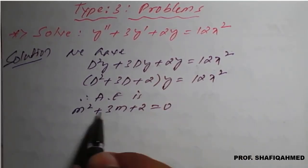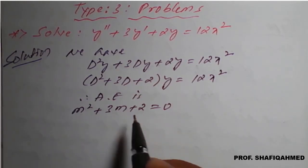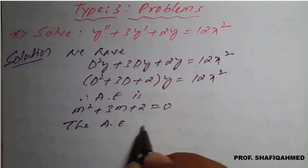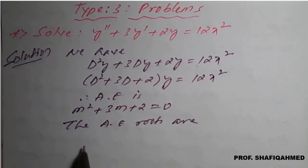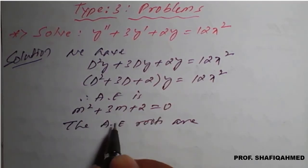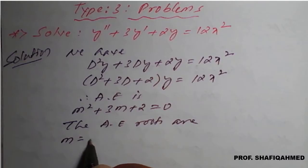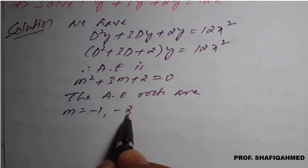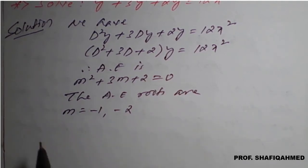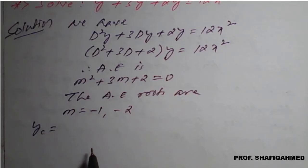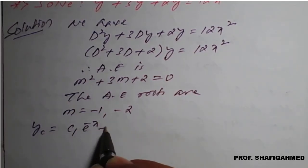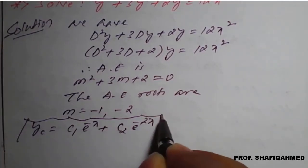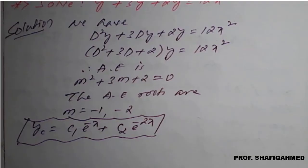Finding the roots of m-square plus 3m plus 2 equal to 0, the auxiliary roots are m equal to minus 1 and minus 2. Therefore, the complementary function yc is equal to c1 e raised to minus x plus c2 e raised to minus 2x.